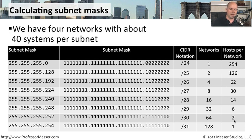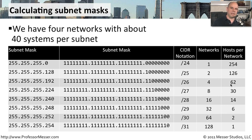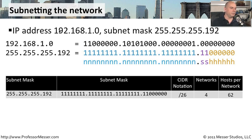Looking at our options: a /28 only allows 14 hosts per subnet — not enough. A /27 only allows 30 — still not enough. A /26 would allow 62 hosts per subnet and also comes out to exactly four networks — our magic number. A /25 would allow 126 hosts per network, which meets the 40-host requirement, but it only creates two networks. We need at least four, so /25 doesn't work. The /26 is the right choice. We've changed the fourth octet of the subnet mask from 0 to 192, effectively adding two more bits to the subnet mask.